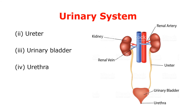After the kidney, the other organs of the urinary system are the ureter, urinary bladder and urethra. The ureter is a duct which carries urine from the kidney to the urinary bladder. It is a tube-like structure about 26 cm in length. It starts from the pelvis of the kidney, passes down in the abdominal cavity, and opens on the posterior aspect of the urinary bladder.